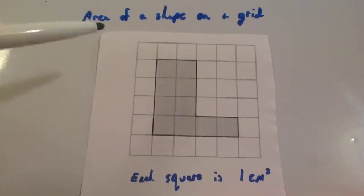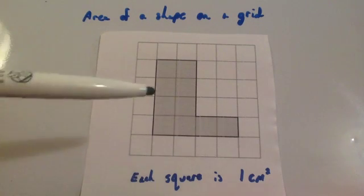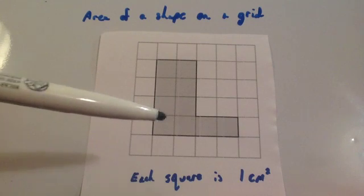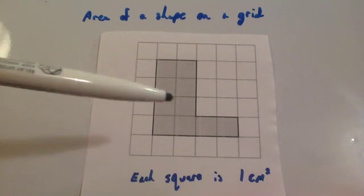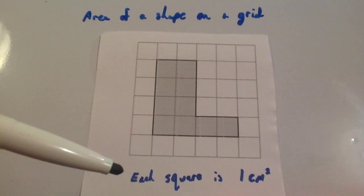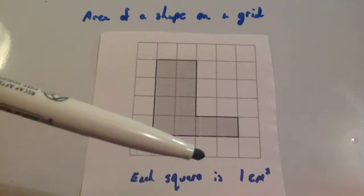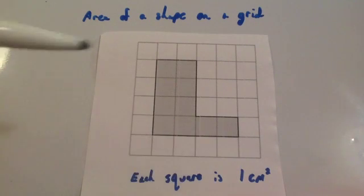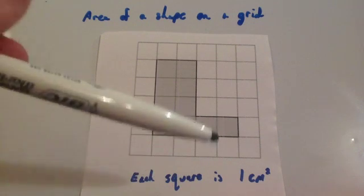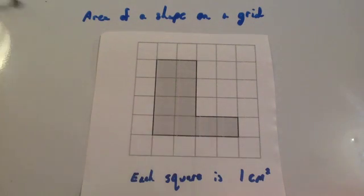In this video we're going to look at how to find the area of a shape on a grid. Here we've got an L-shape on a grid, or a compound shape. You can see it's two rectangles put together. At the bottom, each square is one centimeter squared. Make sure that you check whenever you're doing these types of questions what the scale is. It's normally each square is a centimeter squared anyway.